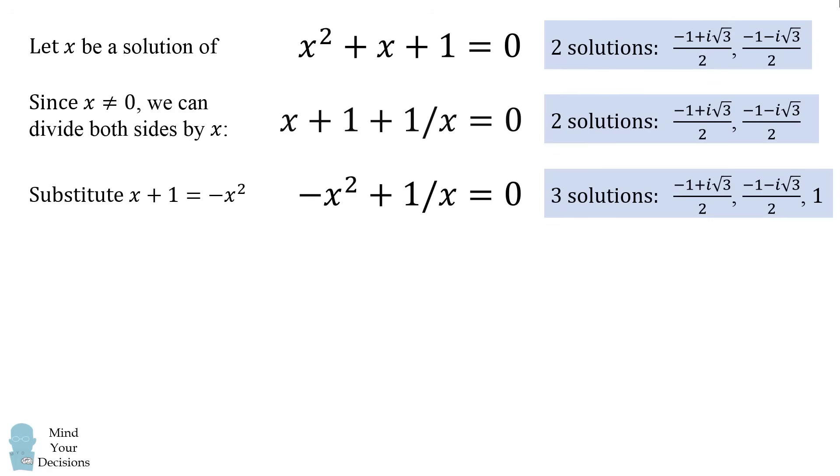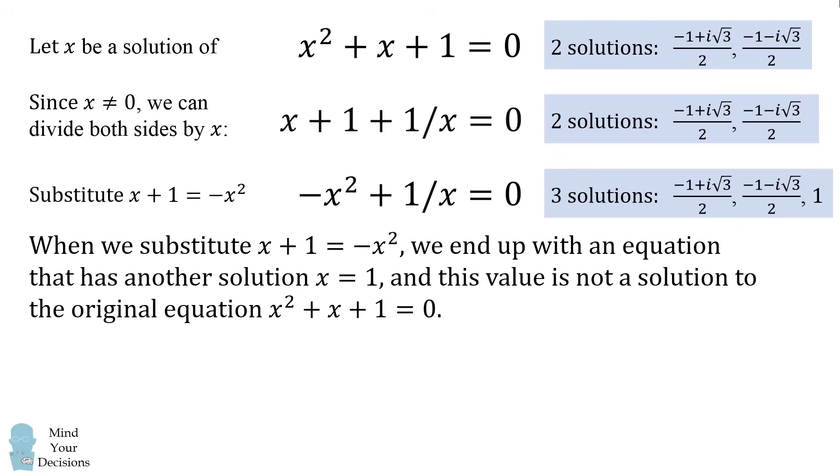Well, you end up with another solution. So you have the same two solutions as before, but then you end up with a new solution of x = 1. Notice if you substitute x = 1 into this equation, you end up with -1 + 1 = 0. So x = 1 is a solution to this equation, but it was not a solution to the previous two equations.